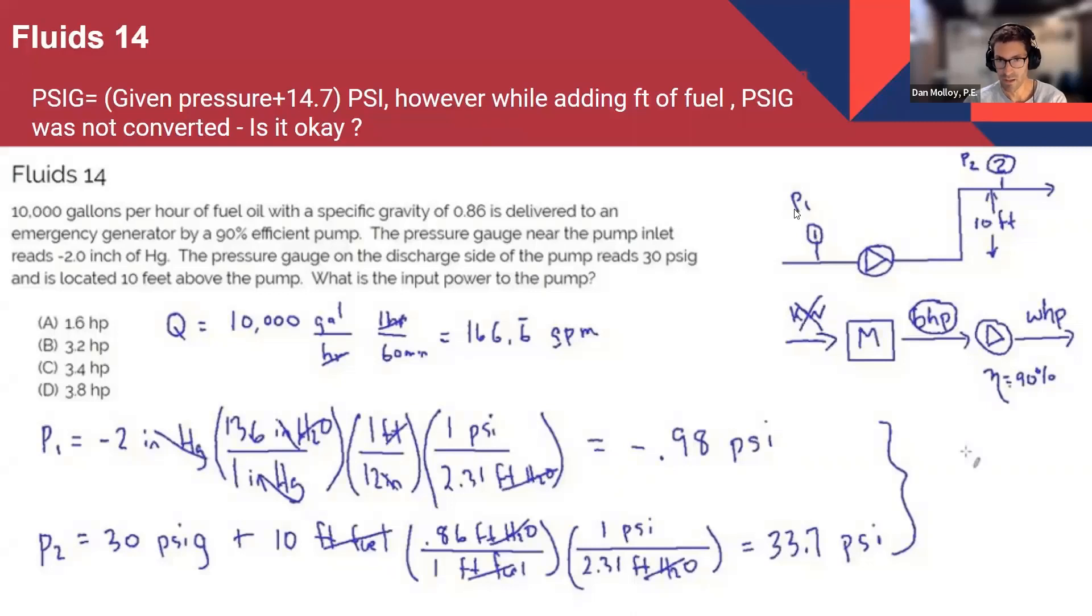Fluids 14, PSIG equals given pressure plus 14.7 PSI. However, while adding feet of fuel, PSIG was not converted. Is it okay?